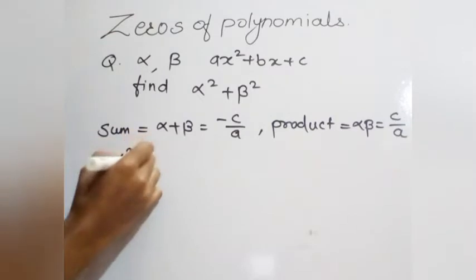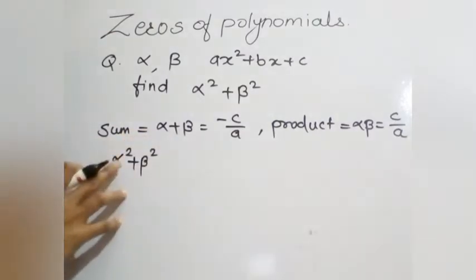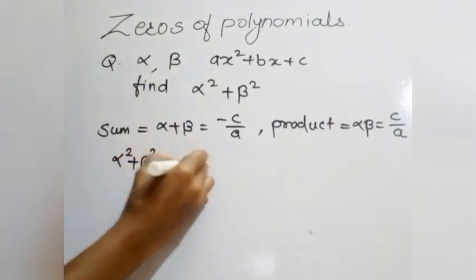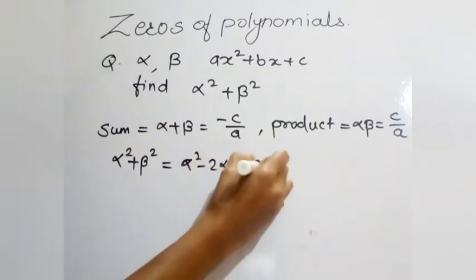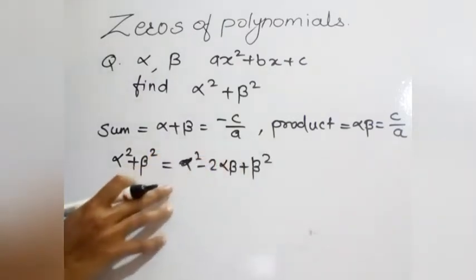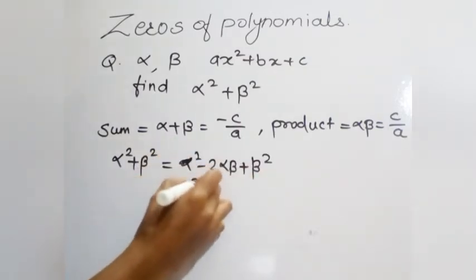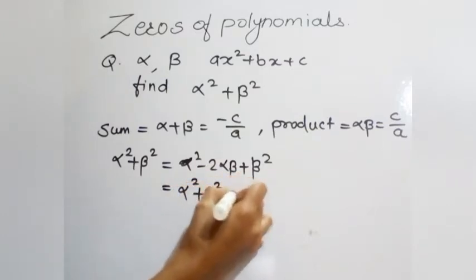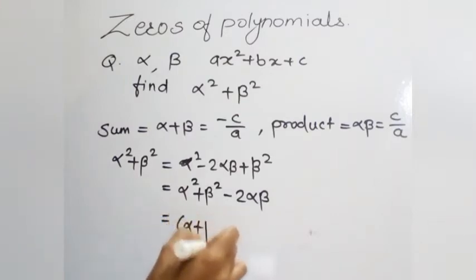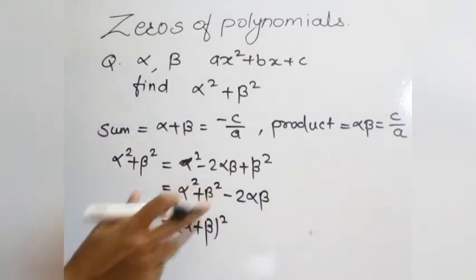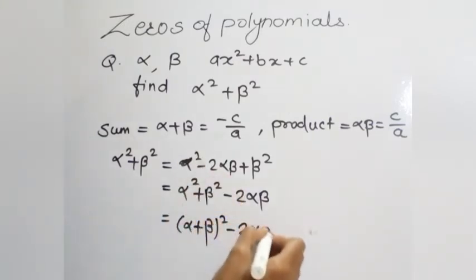Now, we have to find alpha² + beta². We know the identity: a² + b² equals (a + b)² minus 2ab. So we can write alpha² + beta² as (alpha + beta)² minus 2 into alpha beta.